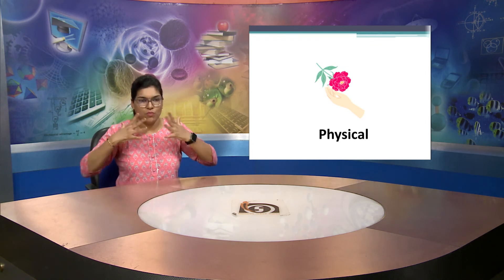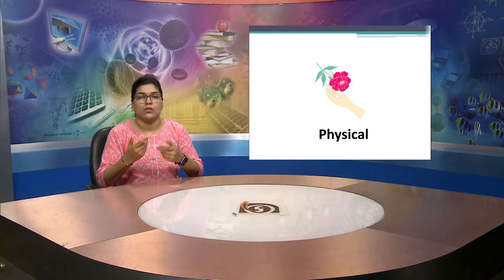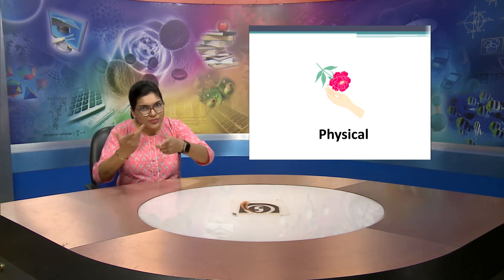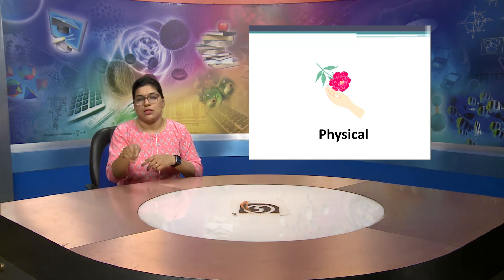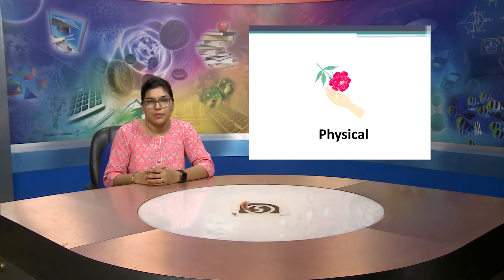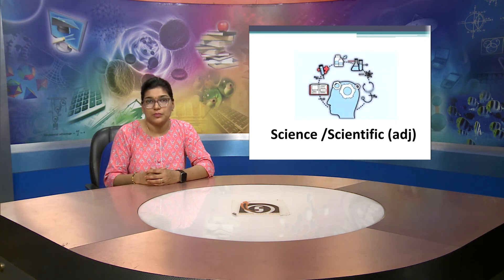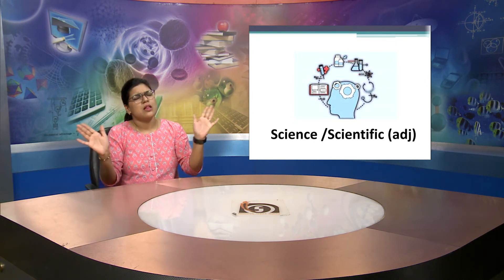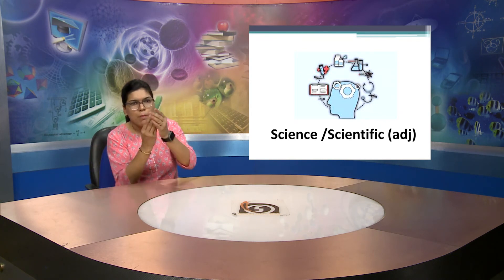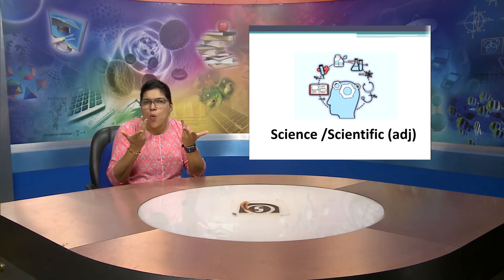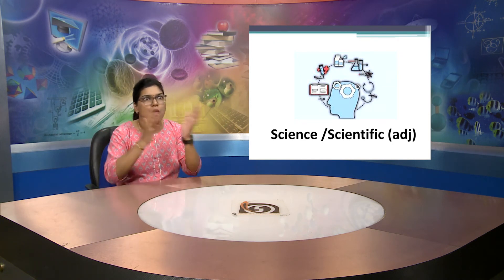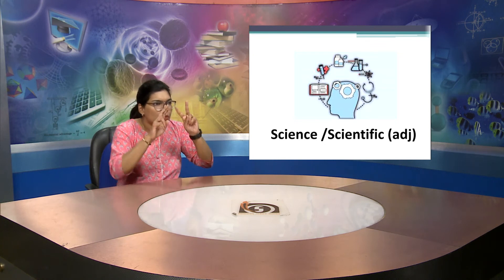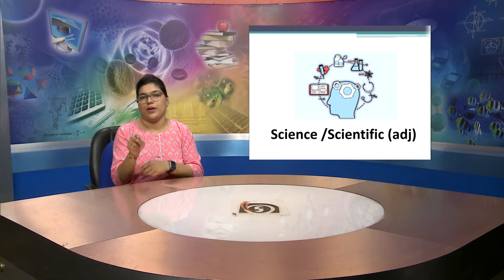The next word is physical. Physical has many meanings, but in this context it means something which we can touch — like water or trees. All those things which we can touch with our hands are known as physical. The next word is science, or another related word, scientific. They have a similar meaning. The word scientific is used here in general — it is a way with which we do our work.